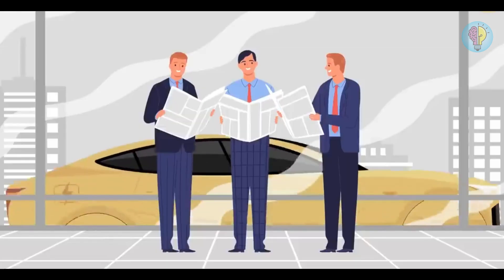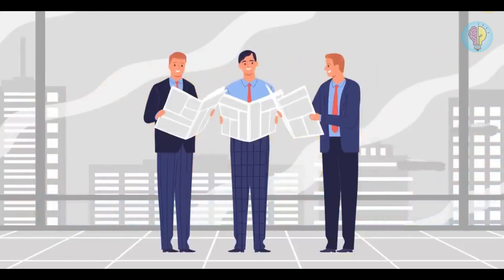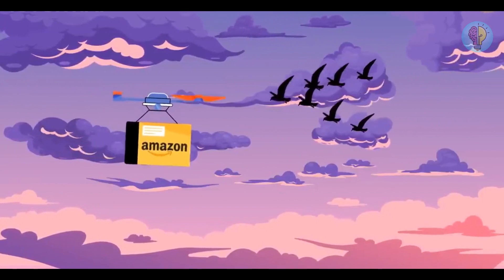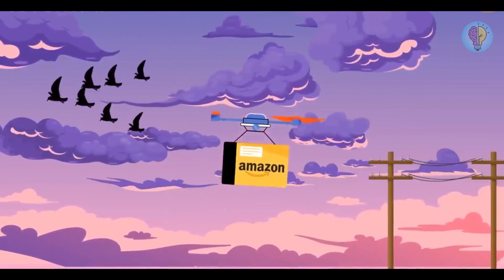Electric air taxis are becoming a thing for transporting people. Amazon is experimenting with air deliveries, and they're proving to be a success. Flying machines have sensors that can notice hazards like birds, wires, and large objects.